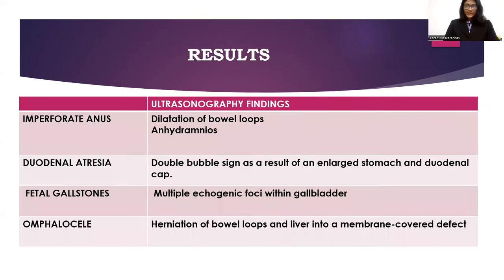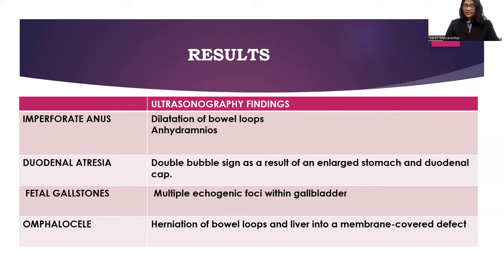My results are as follows. The first case is imperforate anus, in which the ultrasonography findings are dilatation of bowel loops and anhydramnios. Second, duodenal atresia, in which we found the double bubble sign as a result of an enlarged stomach and duodenal cap. Third, fetal gallstones, in which multiple echogenic foci within the gallbladder were found. And fourth, omphalocele — a herniation of bowel loops and liver into a membrane-covered defect.